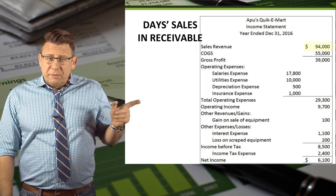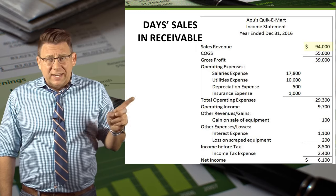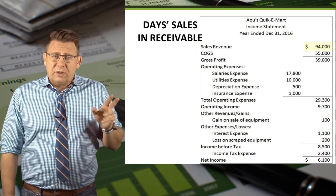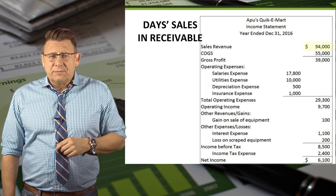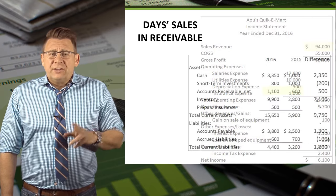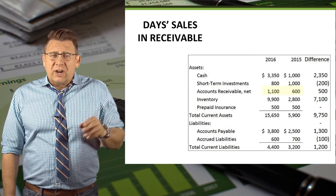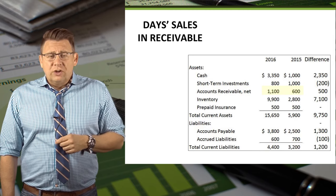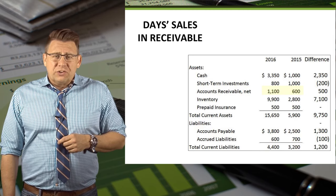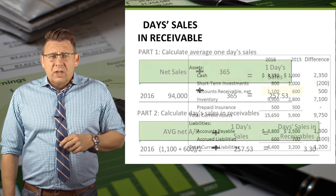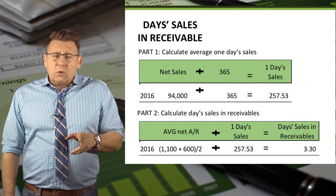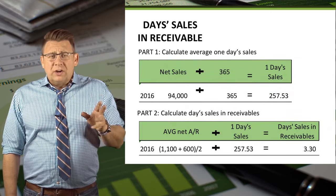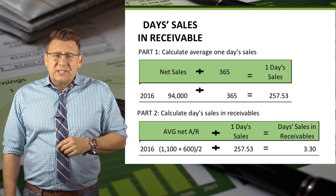Here is an income statement from a sample company. I've highlighted net sales revenue and we're going to use that information to determine the average one day sales. Additionally, we need some information from the current assets section of the balance sheet. I've highlighted two years worth of net accounts receivable balances. For 2016, part one gives us an average day sales of $275.53.